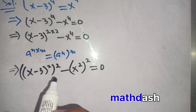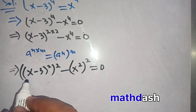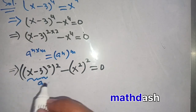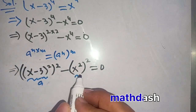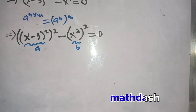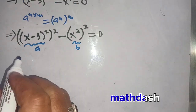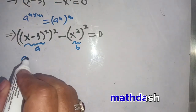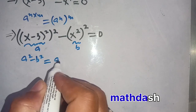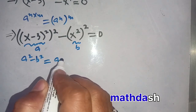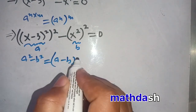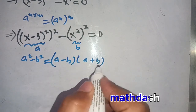In the next step, we let a equal (x minus 3) squared and b equal x squared. We know the identity: a squared minus b squared is equal to (a minus b) times (a plus b).